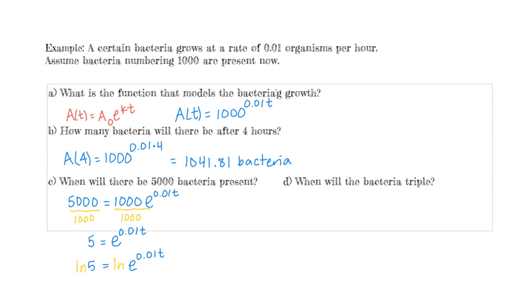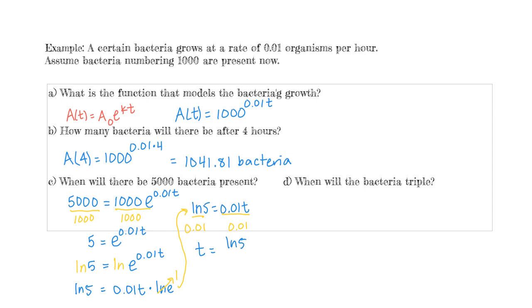When we take the natural log of e, since the base of natural log is E and this base is E, they match, so the exponent can be brought down as a multiplier. We have ln(5) = 0.01 · ln(e). But ln(e) equals 1, so we get ln(5) = 0.01T. Now we solve for T by dividing both sides by 0.01, giving T = ln(5) / 0.01.